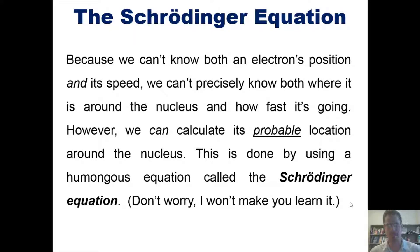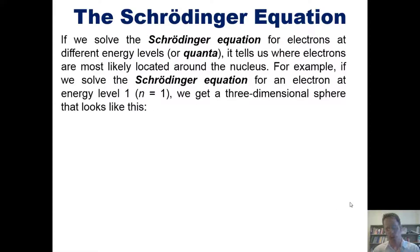Nevertheless, if we solve the Schrödinger equation for electrons at different energy levels or quanta, it tells us where electrons are most likely to be located around the nucleus. For example, if we solve the Schrödinger equation for an electron at energy level one, or n = 1, we get a three-dimensional sphere that looks like this.